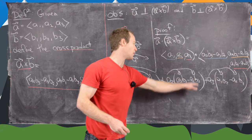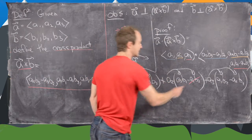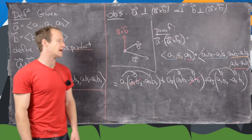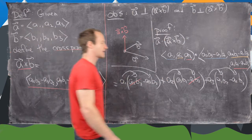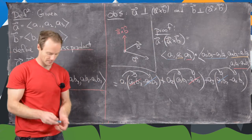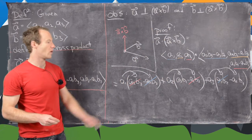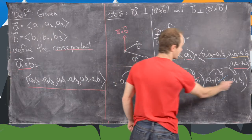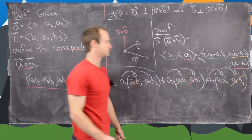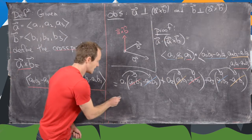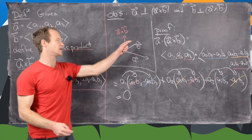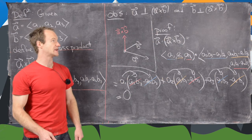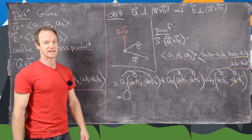The term a1 a2 b3 is canceled by a2 a1 b3, so those two cancel. Then a1 a3 b2 is exactly canceled by the corresponding term. And a2 a3 b1 is canceled by a3 a2 b1. In the end everything equals zero, which tells us that a and a cross b are orthogonal. The other proof, that b is perpendicular to a cross b, is easy to show similarly.